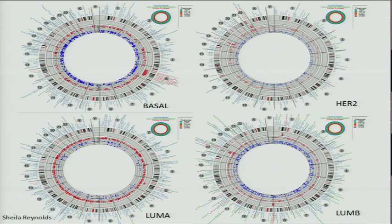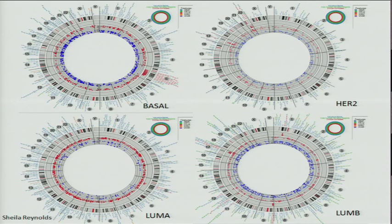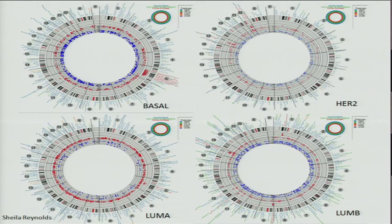This is another example from breast cancer, showing similar types of associations but this time with PAM50 calls of different subtypes: basal, luminal A, luminal B, and HER2. Instead of aggressiveness, here we have the different subtypes. This is a very general approach — it can be used to find associations with anything you like.